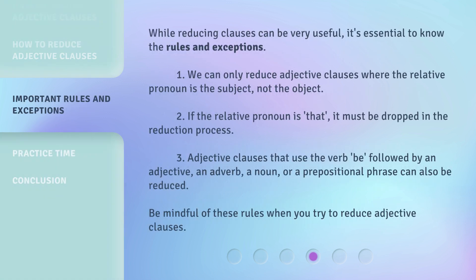While reducing clauses can be very useful, it's essential to know the rules and exceptions. 1. We can only reduce adjective clauses where the relative pronoun is the subject, not the object. 2. If the relative pronoun is 'that,' it must be dropped in the reduction process. 3. Adjective clauses that use the verb 'be' followed by an adjective, an adverb, a noun, or a prepositional phrase can also be reduced. Be mindful of these rules when you try to reduce adjective clauses.